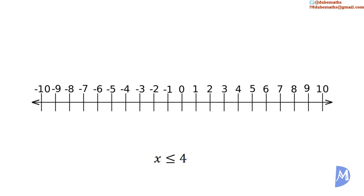The inequality x is less than or equal to 4 means that x can have the value 4 or any value less than 4. The shaded circle shows that the value 4 is included.